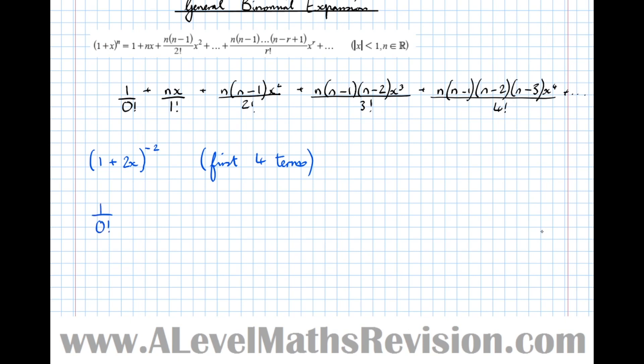So let's put in the formula. We've got 1 over 0 factorial plus n, which is minus 2, times the x term, which isn't just x, it's 2x. In this case we've replaced the x in this formula with 2x. So the 2x needs to be in brackets, 2x over 1 factorial plus minus 2, minus 3, times 2x squared over 2 factorial. And then finally the fourth term, minus 2, minus 3, minus 4, times 2x cubed over 3 factorial.